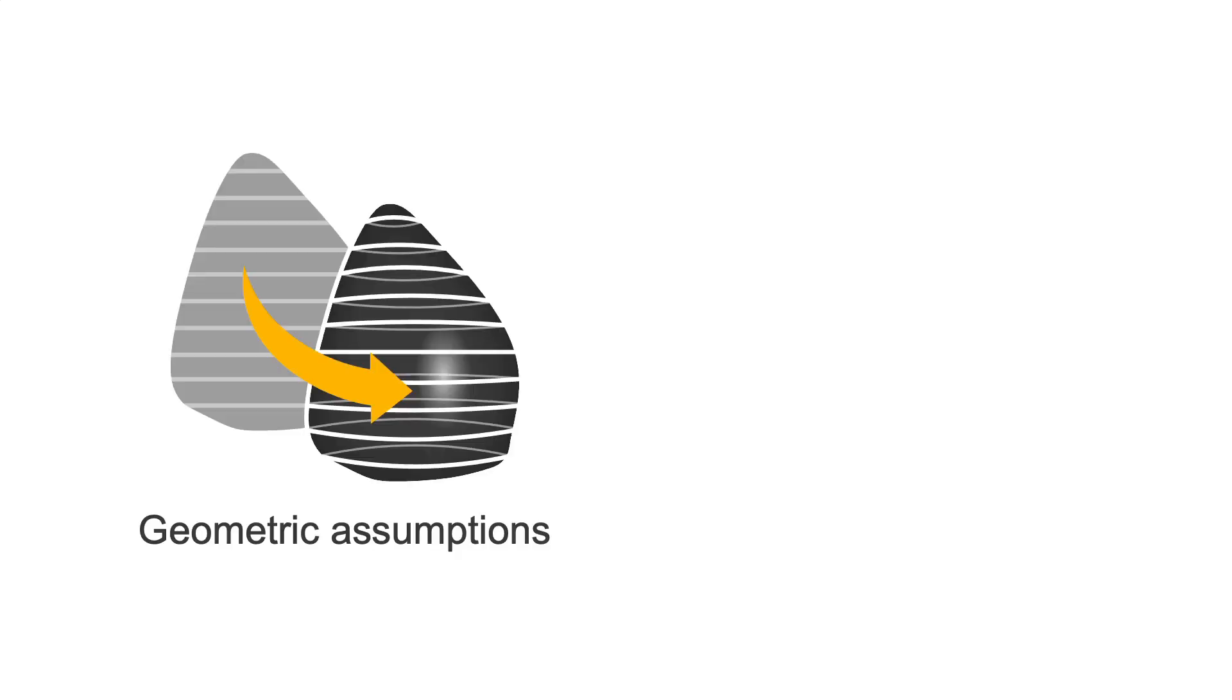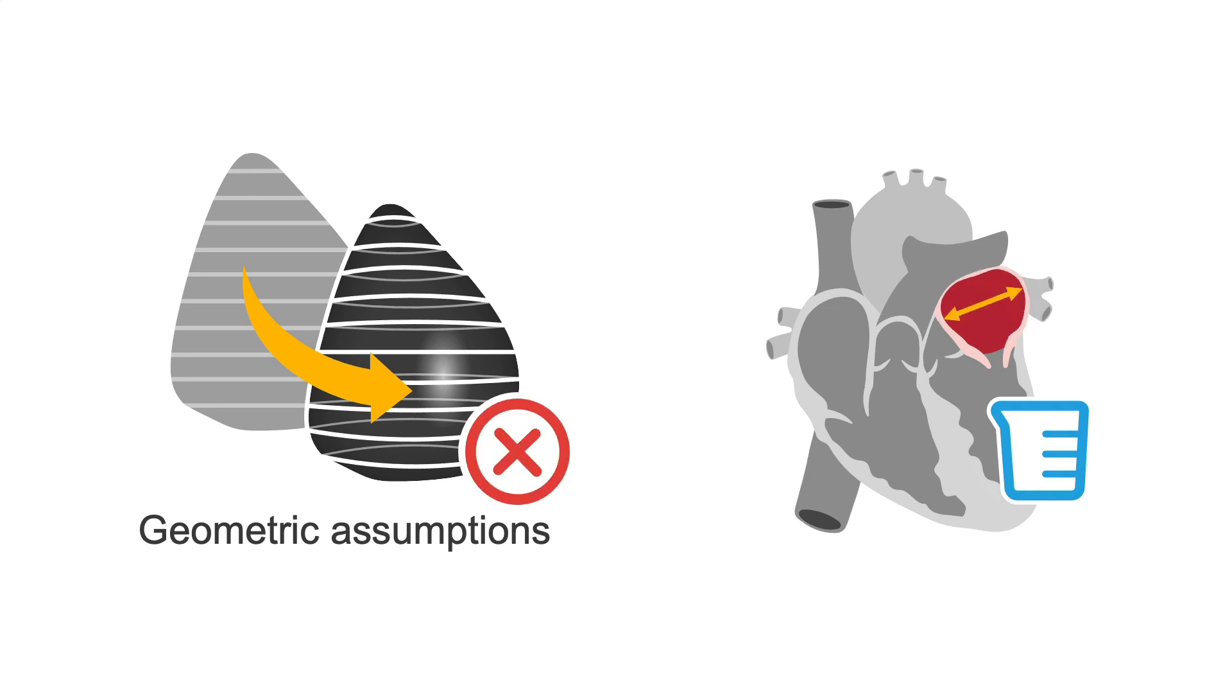Therefore, geometrical assumptions that make 2D echo an accurate method to calculate left atrial volume in normal atria may not apply in a similar way to dilated atria.